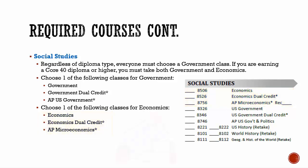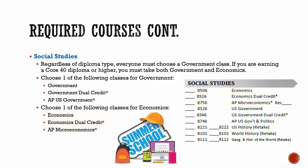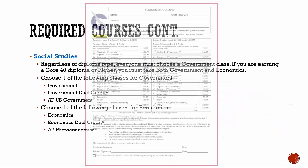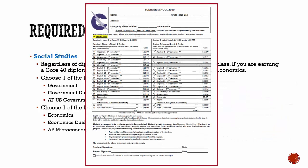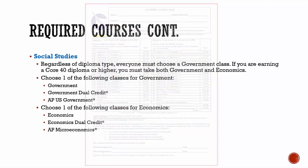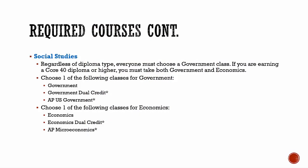Government and economics are both offered in summer school. If you do not take either or both of these courses in summer school, then both courses must be on your course selection sheet. If you do plan on taking either or both in summer school, mark them on the summer school form but not on your course selection sheet. Then turn in your summer school form along with your course selection sheet, so your counselor will know you are planning to take those courses in summer school.